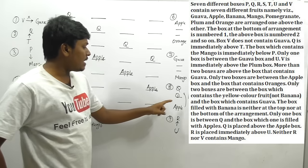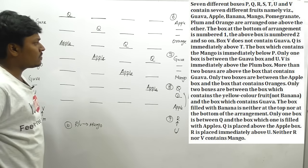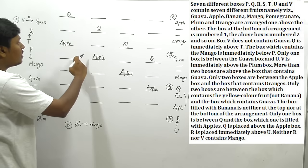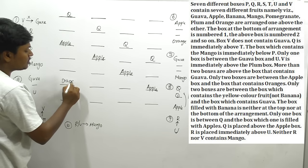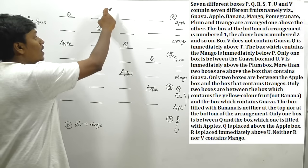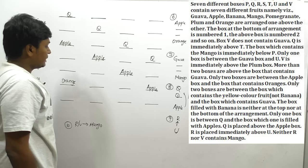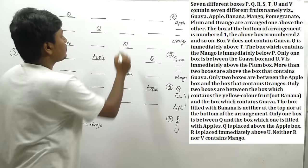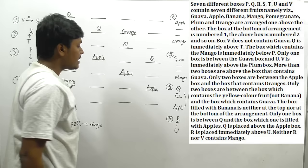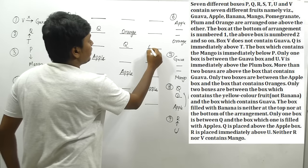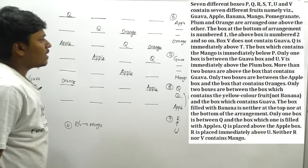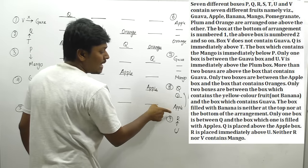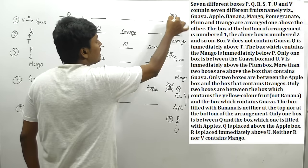Now applying the apple-orange clue: if apple is here, two boxes gap gives orange's position. Let me work through each condition — apple at position 1: orange at 3 or below; apple at position 2: orange at 4. Combining with Q above apple by one box, I can map out possibilities. I can now eliminate clue 8 (Q-apple) and clue 6 (apple-orange) after applying them.